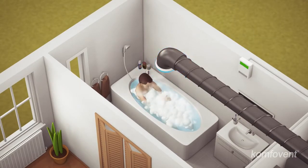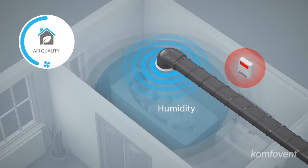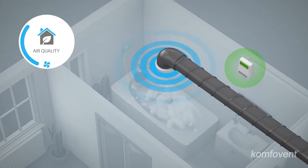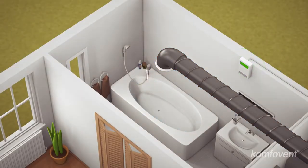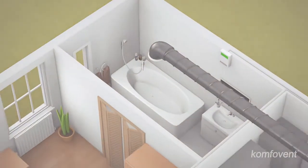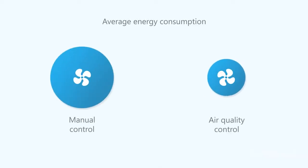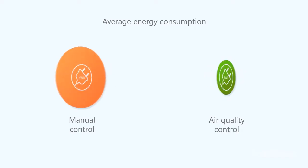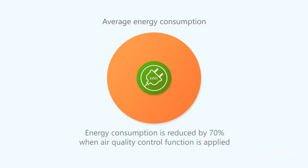An indoor humidity sensor measures relative humidity, and if the threshold limit value is exceeded, it increases the intensity of ventilation, thus removing excess moisture from the rooms. It has been estimated that a ventilation system functioning on demand reduces annual energy consumption of the unit up to three-fold.